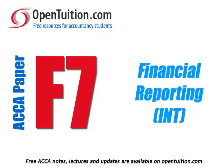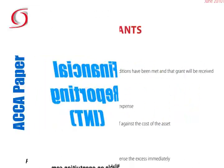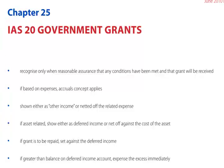This is a lecture from OpenTuition. For the free lecture notes that go with this podcast, please visit OpenTuition.com. F7 Chapter 25: IAS 20 Government Grants.